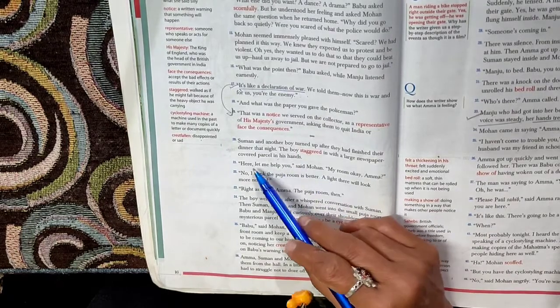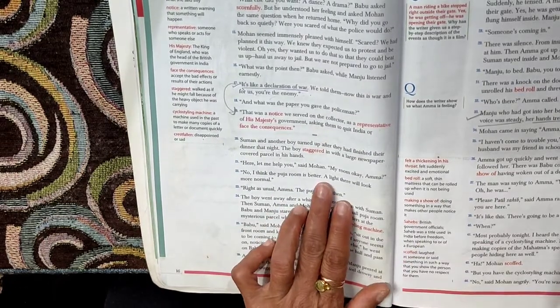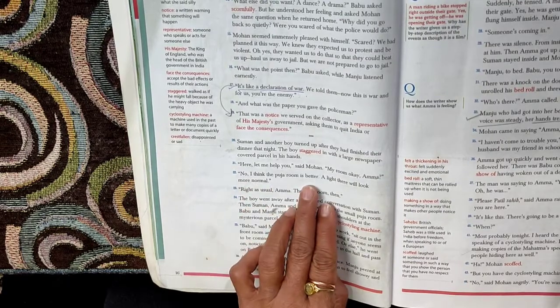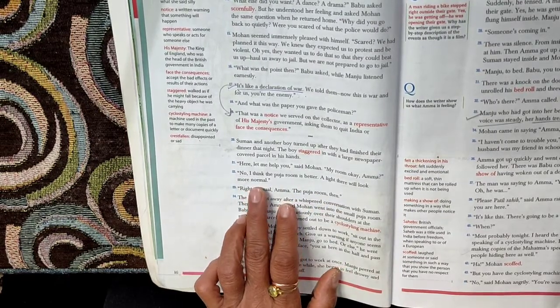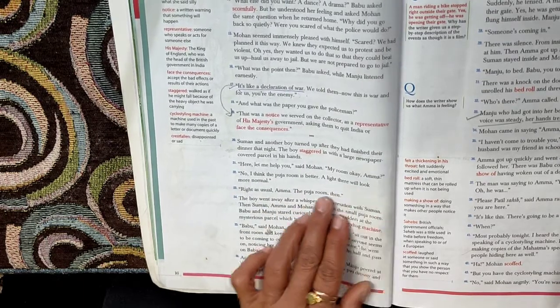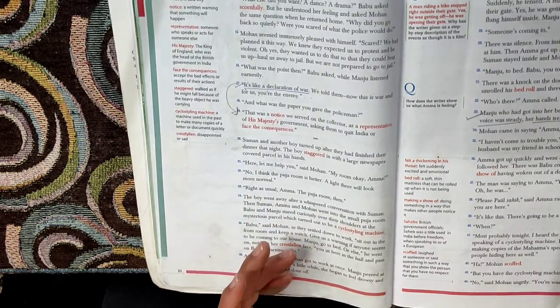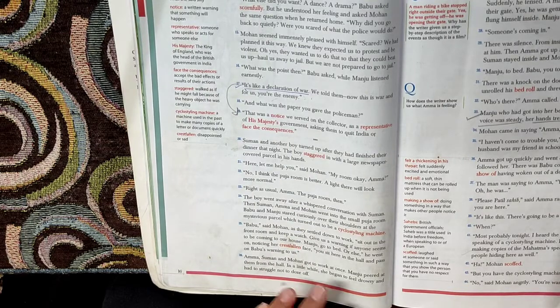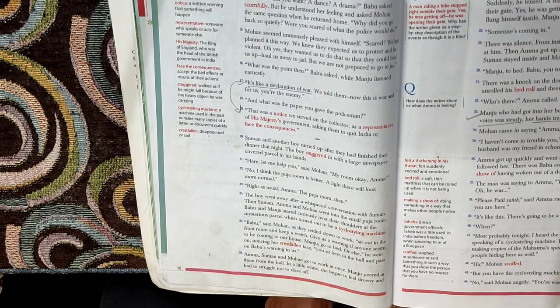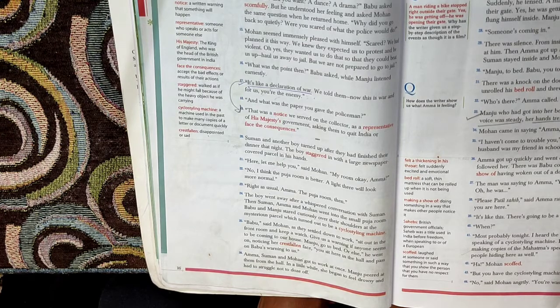Mohan asks Amma, shall we keep the parcel in my room? No, I think the puja room is better. A light there will look more normal. So the reply from Amma comes: don't keep it in your room, keep it in the puja room. Why? Because a light there will look more normal. There is light in the puja room always, so when the light will be on it will be very normal and nobody would be suspicious of what the parcel carried. Right as usual, Amma is always right. So let's keep the parcel in the puja room.